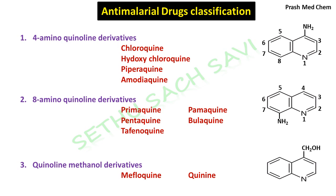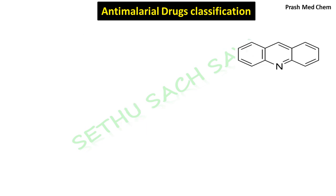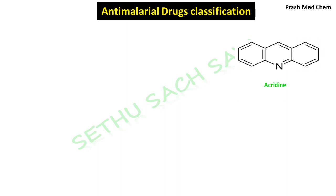So those are the first three classes of drugs. Next is this particular structure. Here you can see again a quinoline ring, and to the right side of the quinoline ring, one more benzene ring is attached. This whole structure is called acridine. In acridine, there are mainly three rings altogether: the first ring is a benzene, the second ring is a pyridine, and the third ring is again a benzene.